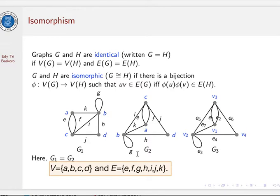Now, look at G2 and G3. Their diagrams look the same but the labeling of the vertices and edges here are different. For instance, this vertex is labeled by A, but this vertex is labeled by V1. But their structures are the same. So in this case, G2 and G3 are isomorphic.